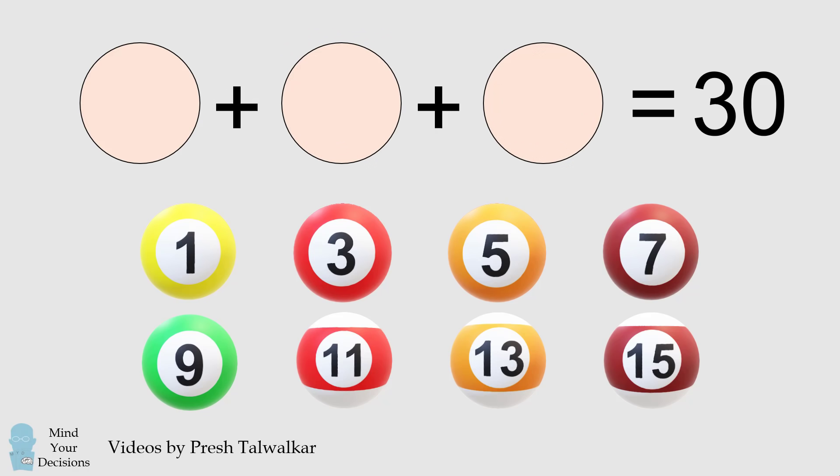You need to select 3 of the balls and place them in the circles such that the numbers on the balls have a sum of 30. You're allowed to use a number more than once, but you must use exactly 3 of the balls.